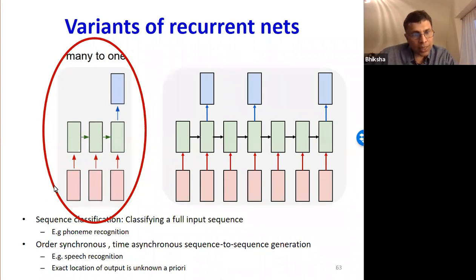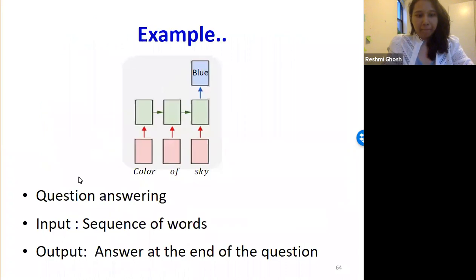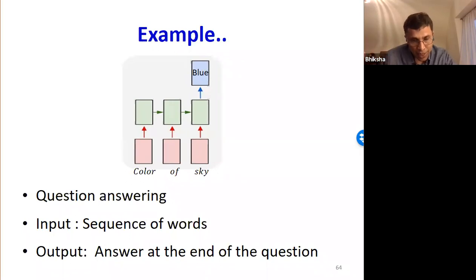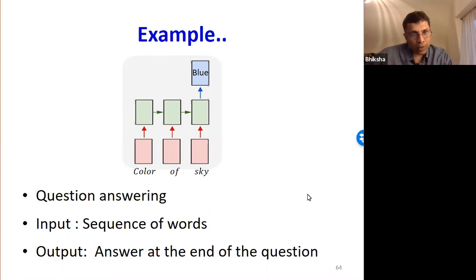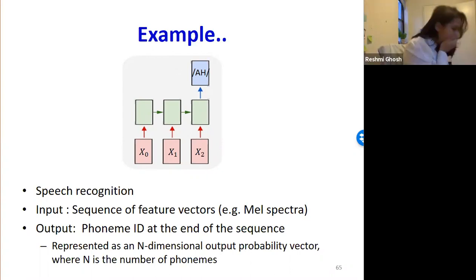This is a network that takes a sequence of inputs and produces a single output at the end of the sequence. For example, analyzing a sequence of text and telling you its sentiment, or analyzing speech and telling you what was spoken. This is the kind of network you'll encounter where the entire input must be analyzed and then an answer must be produced — like question answering or speech recognition.